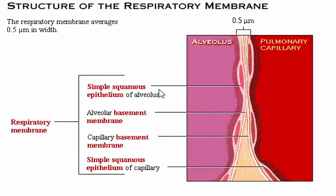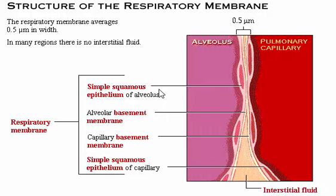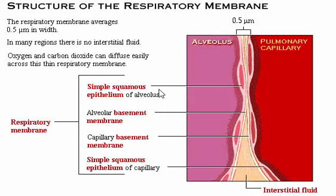This membrane is extremely thin, averaging 0.5 micrometers in width. Notice also that in many regions of the membrane there is no interstitial fluid. This is because pulmonary blood pressure is so low that little fluid filters out of the capillaries into the interstitial space. Oxygen and carbon dioxide can diffuse easily across this thin respiratory membrane.